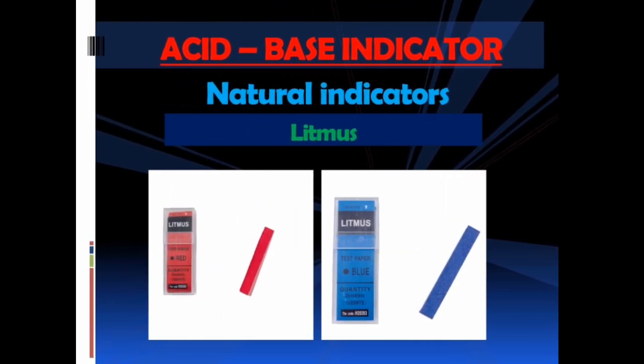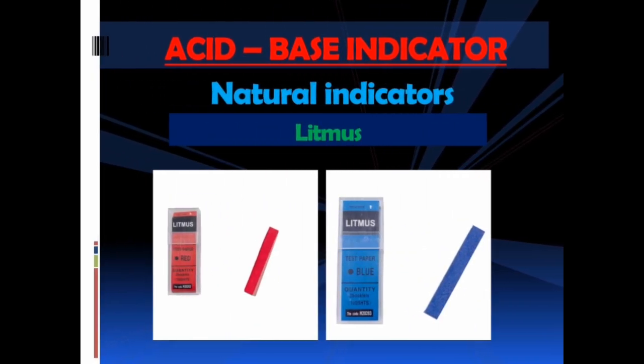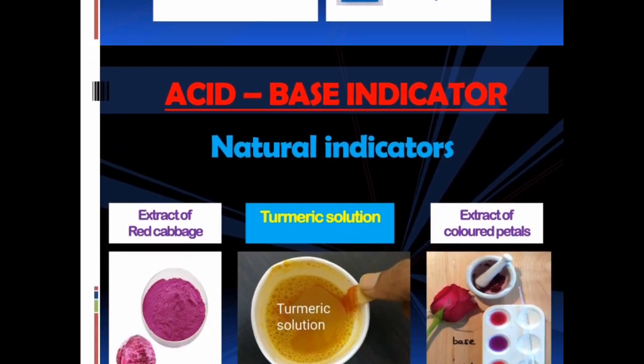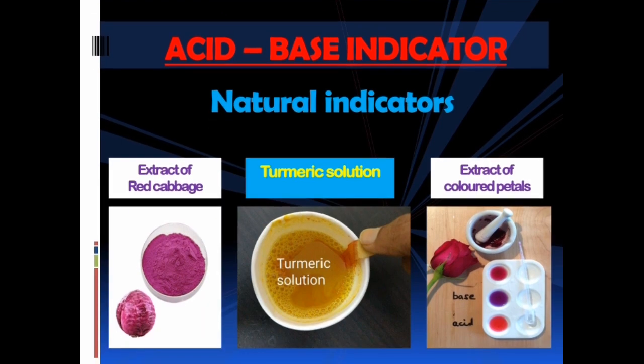You can see on the screen natural indicator litmus papers. On the left, red litmus; on the right, blue litmus. Other natural indicators are also on the screen: first, extract of red cabbage; in the middle, turmeric solution; and on the right side, you can observe the extract of colored petals.